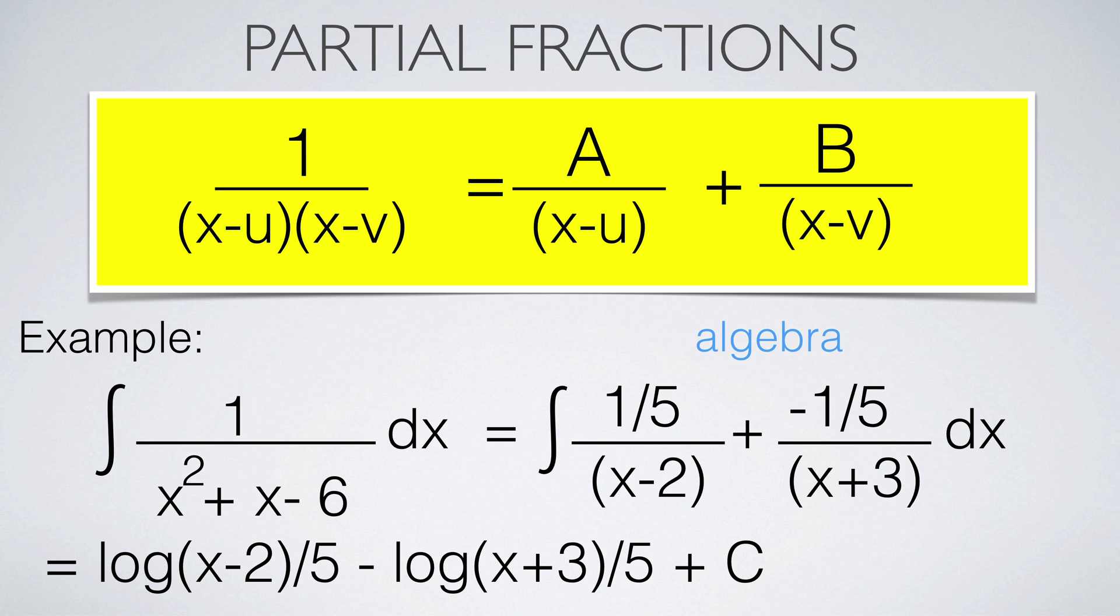The method of partial fractions is more like an algebra trick. It is a method to write a rational function in terms of functions we know how to integrate. Here is a typical example. In order to find the constants a and b, we cross multiply and compare coefficients.